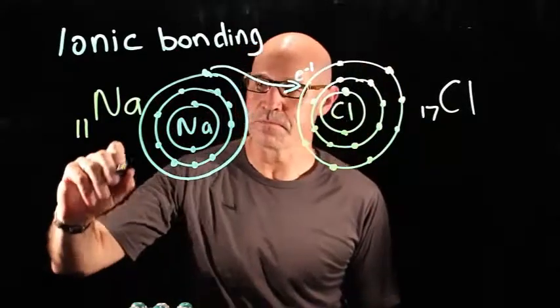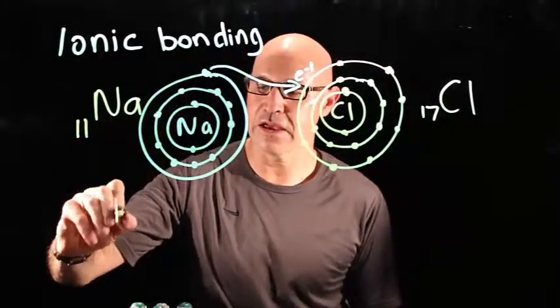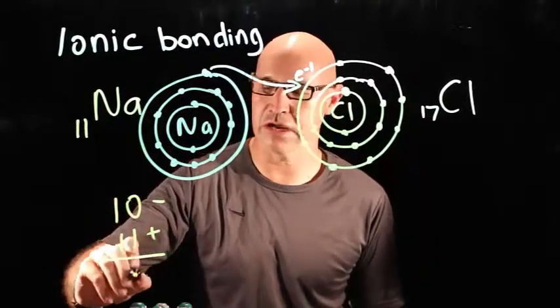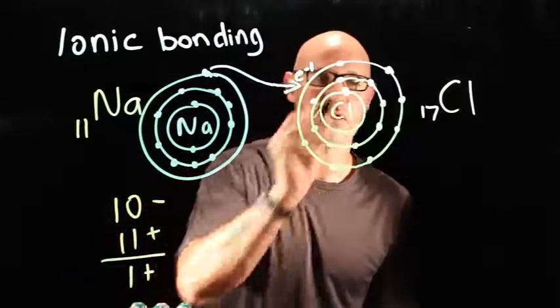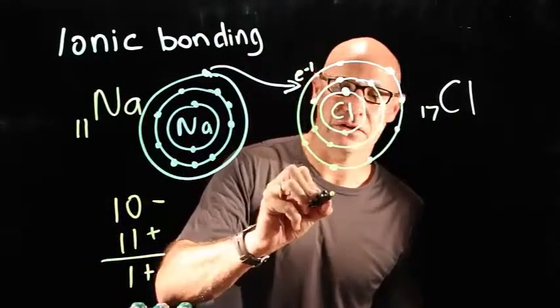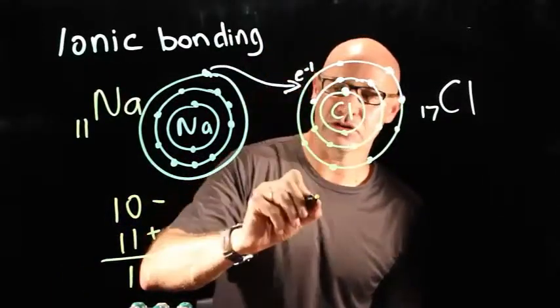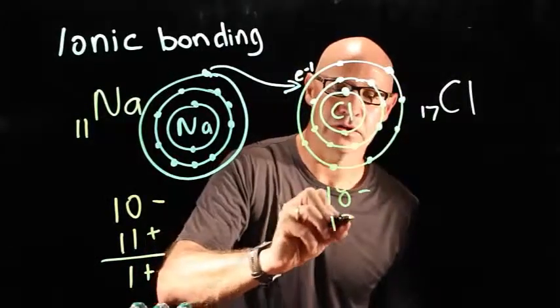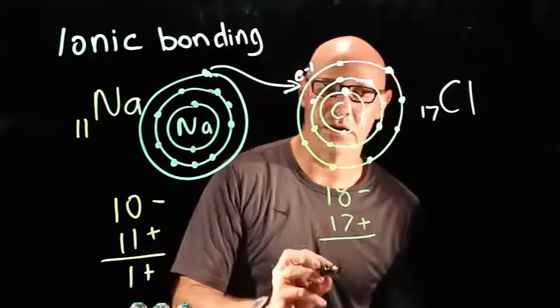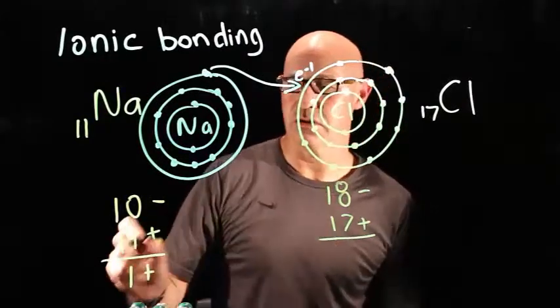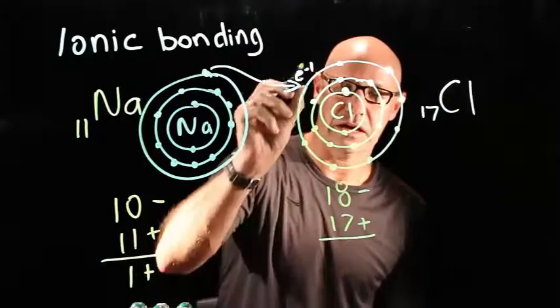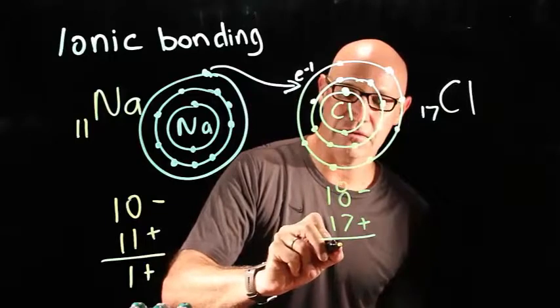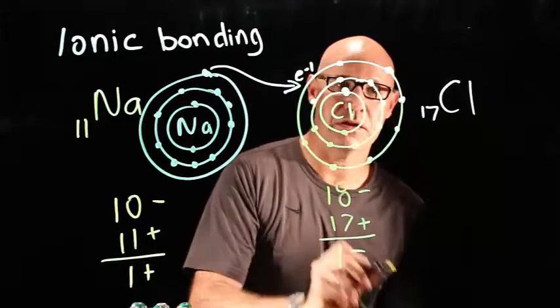So, sodium then only has 10 electrons left, 11 protons. It has a charge of 1 plus. Chlorine has gained an electron, so it now has 18 electrons, 17 protons. So, it has an overall charge of... it's gained an electron. So, it's got one extra negative. So, it's got a charge of 1 minus.